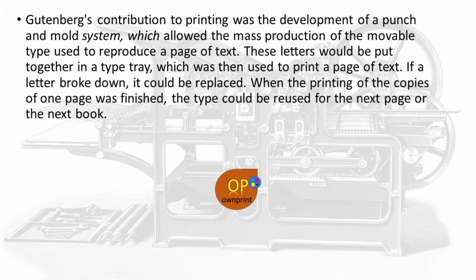Gutenberg's key contribution to printing was the development of a punch-and-mold system, which allowed the mass production of movable type used to reproduce a page of text. These letters would be put together in a type tray, which was then used to print a page of text. If a letter broke down, it could be replaced. When the printing of copies of one page was finished, the type could be reused for the next page or the next book.